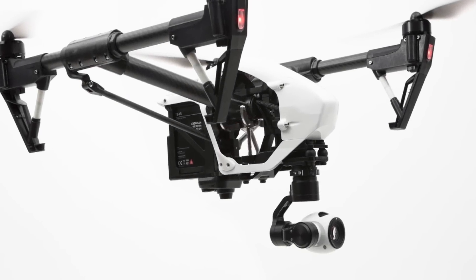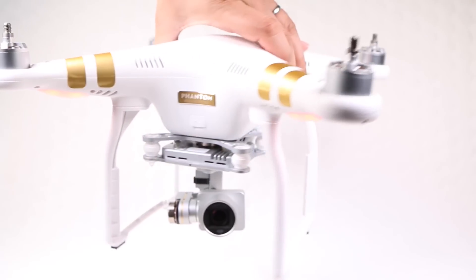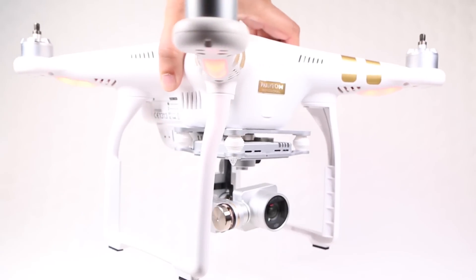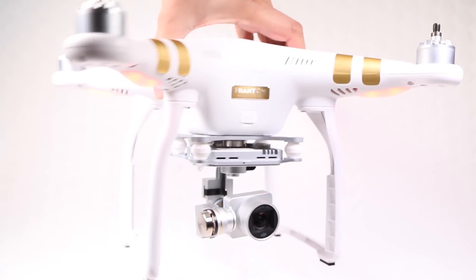Unlike the Bigger Brother Inspire 1, the only way to achieve camera panning with the Phantom range is to apply left or right yaw, or rotation, to the entire craft.